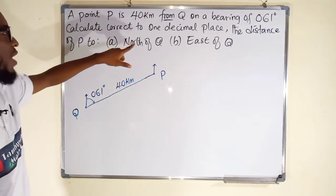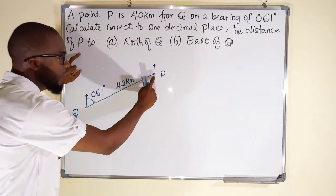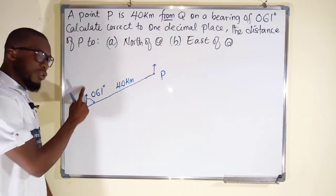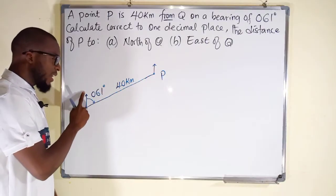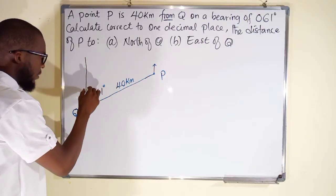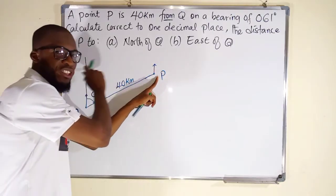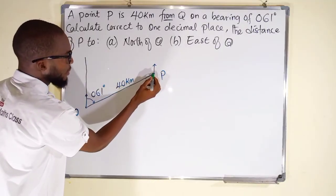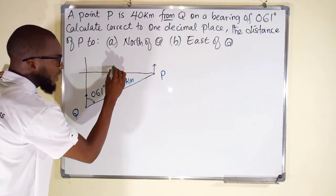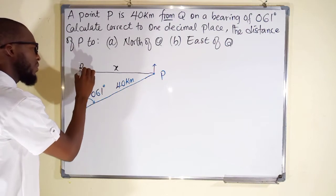So let's assume this is our point P. It also has a north pole. The distance apart is 40 kilometers. We are done with this statement. Let's come back to our question. We are asked to find, correct to one decimal place, the distance of P. This is the P. We want to find the distance of P to north of Q. Where is the north of Q? This is Q and this is the north of Q. So we are going to draw a straight line vertically from Q.